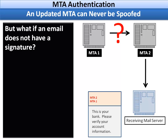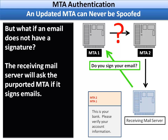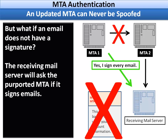Another great feature is that an updated MTA can never be spoofed. Consider an email apparently going from MTA number one to number two until it reaches the receiving mail server, saying 'This is your bank. Please verify your account information.' We look at the signatures in the header and there are none. The receiving mail server will still ask the purported MTA if it signs emails. It asks MTA number one, 'Do you sign your emails?' and MTA number one answers, 'Yes, I sign every email.' Since MTA number one signs every email and yet there's no signature, we know that MTA number one never originated this email and that this email is spam.